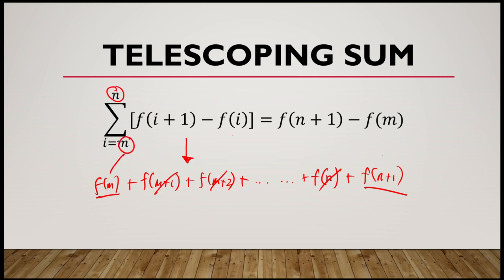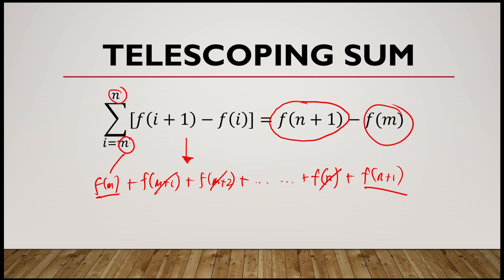If you notice in the simplification, on the right side, this is f(n+1), which is the next term after the upper boundary or upper limit, minus f(m), which is the first term since we began at m.